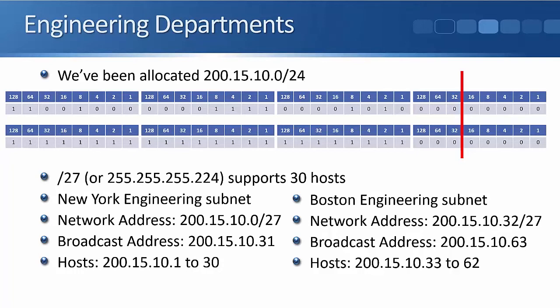That's the New York engineering subnet. Next is Boston engineering. The last broadcast address used was .31, so the network address we're going to use is .32: 200.15.10.32/27. Still using /27, where the line is after the 32, so the next network address would be .64. Our broadcast address is therefore 200.15.10.63, and our hosts are the addresses between network and broadcast: 200.15.10.33 up to .62.